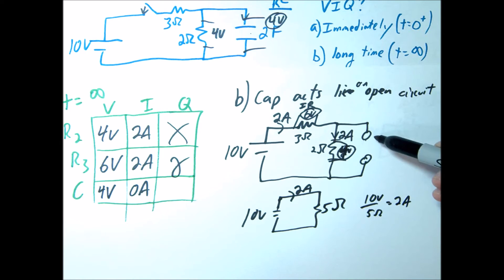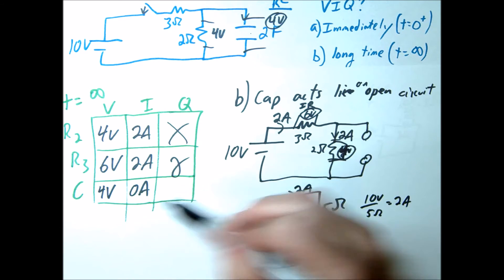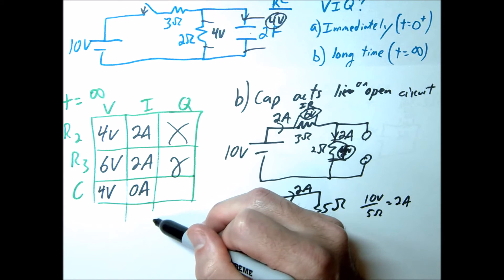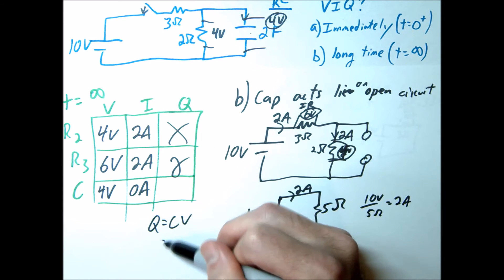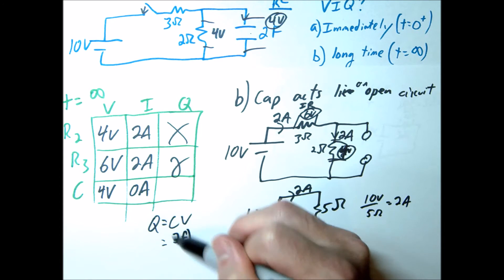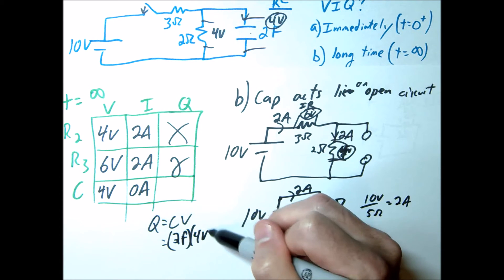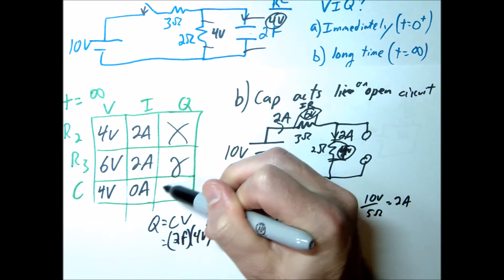The final thing we do need to do is find the charge stored on the plates. So we're just going to use Q equals C times V. So that was 2 farads times 4 volts gives us 8 coulombs of charge.